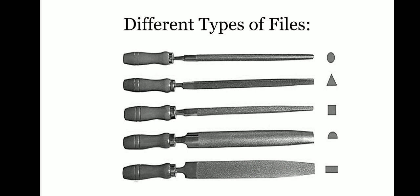The first one on the top is the round file. It is used to file curved surfaces, enlarge holes of circular cross sections, slots, corners, etc. It may be tapered or parallel and is double or single cut, circular in cross section. Second one is the triangular file. It is used to file V grooves and sharpen woodworking saws.